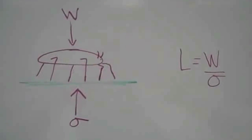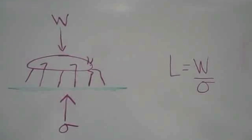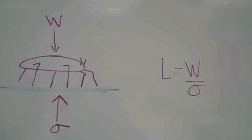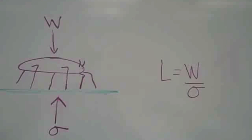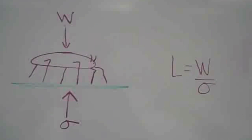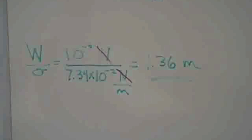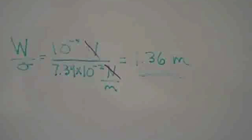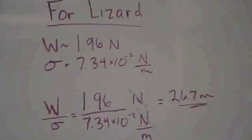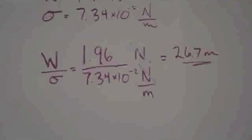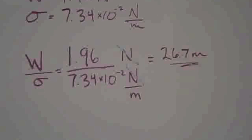If we use this equation — L equals weight divided by surface tension — we can find the one-dimensional interface length needed to stand on water. Here's a free body diagram for the water strider. If you work out the problem, assuming the weight of the water strider is 10 to the negative 4th newtons, you get an interface length of 1.36 meters, but that's only in one dimension. For a lizard, the weight is about 1.96 newtons, which gives a total one-dimensional length of 26.7 meters.